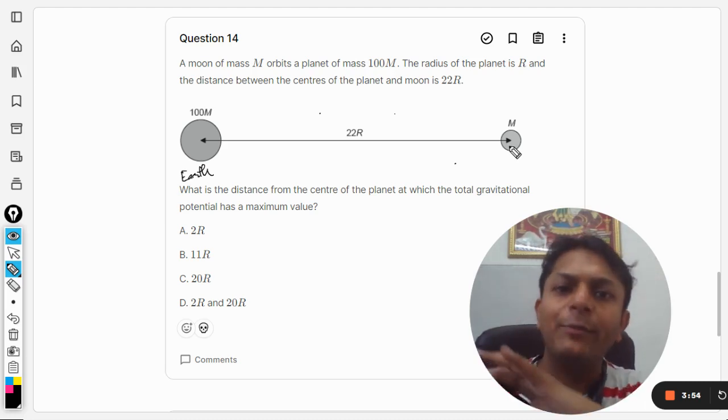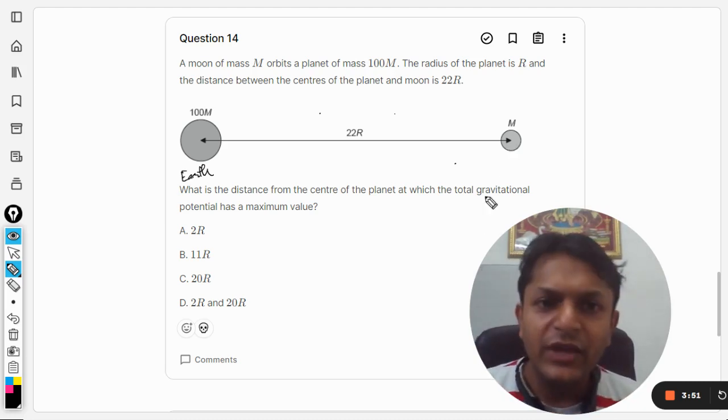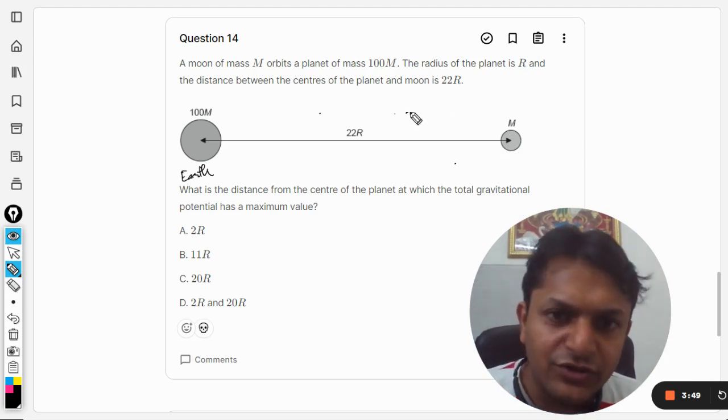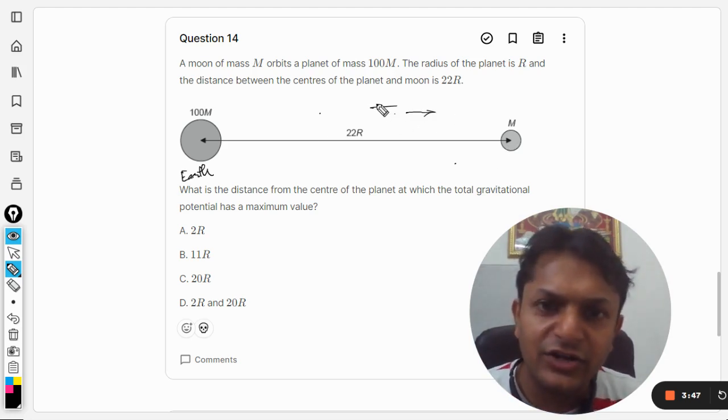So moon is attracting towards the right hand side and Earth is attracting towards the left hand side.